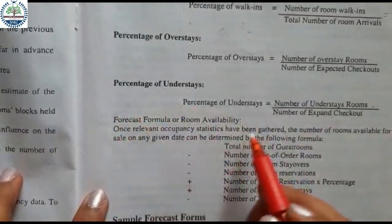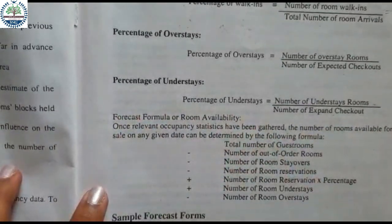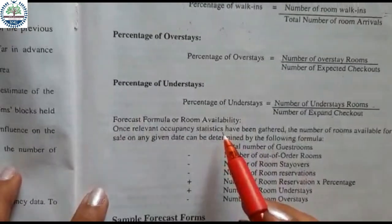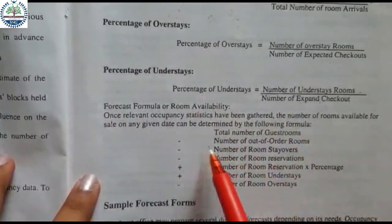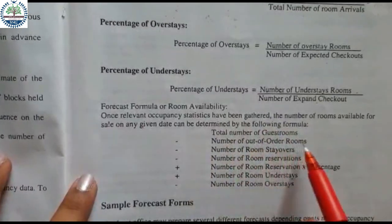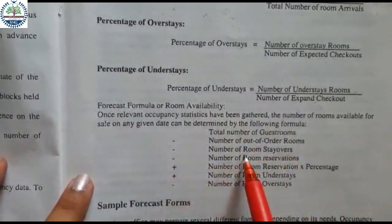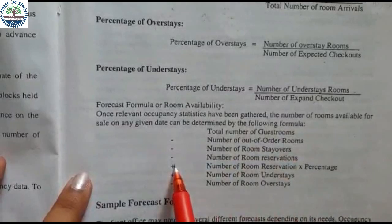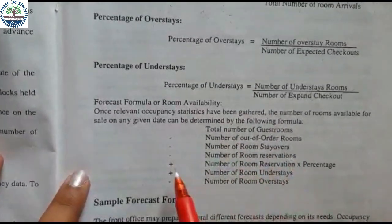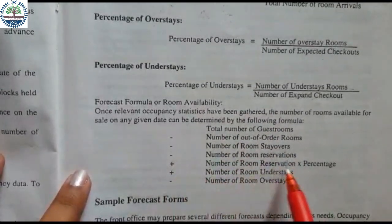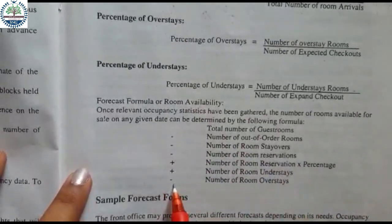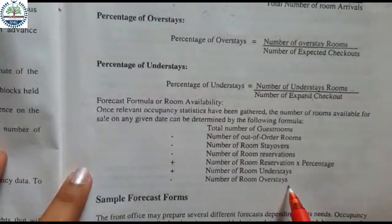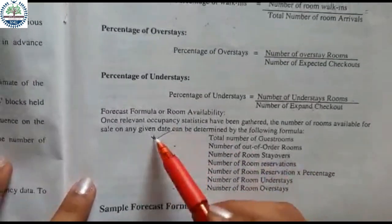So how do we calculate room forecast — that is, forecasting of room availability? The formula is: total number of guest rooms minus number of out-of-order rooms minus number of rooms on stay-over minus number of room reservations plus number of room reservations multiplied by percentage of no-shows minus number of understays minus number of overstays. This is your formula for forecasting room availability.